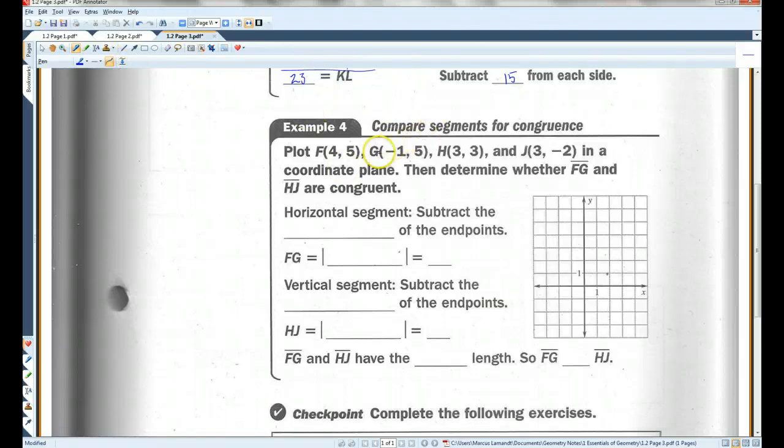Example 4. Plot these four points in the coordinate plane. So let's do that first. Let's see here. 4, 5 would be 1, 2, 3, 4. 1, 2, 3, 4, 5, that'd be here.